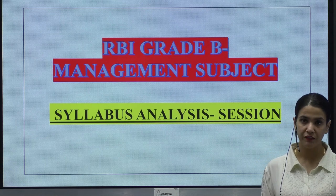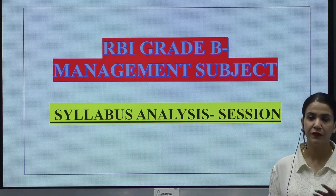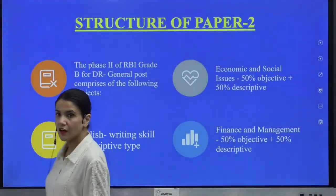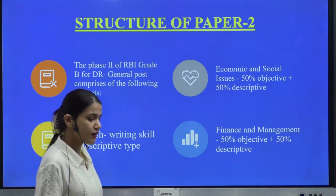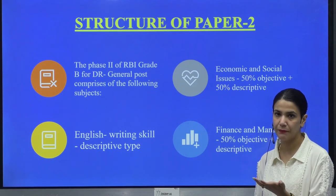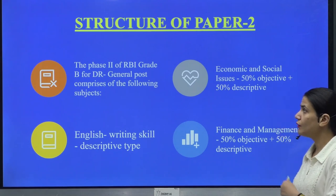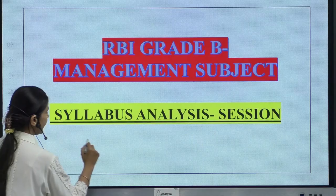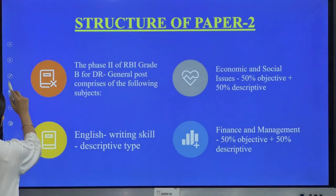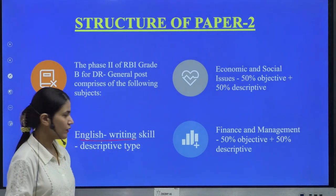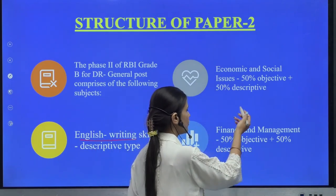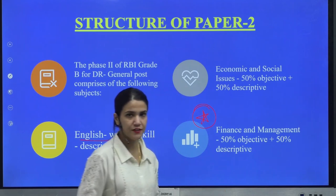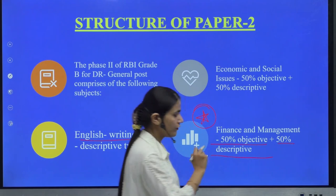Since the preparation is going to be thorough and we are going to be studying each and every topic very clearly and in detail, let's just do a quick management subject analysis in context to the RBI Grade B exam. Specifically, if I talk about Paper 2 — because finance and management is a part of your Paper 2 — after you have qualified Paper 1, then you are attempting Paper 2. There is English writing and skills, which is usually a descriptive type, then there is economics and social issues where there is 50% objective and 50% descriptive. And then you have finance and management, which we are going to be discussing today. Finance and management is basically 50% objective and 50% descriptive.